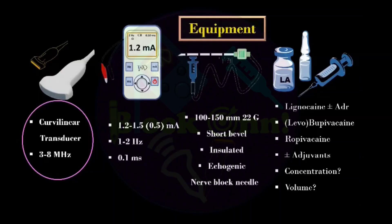For lumbar plexus block, if you are using ultrasound or dual guidance, we generally use curvilinear transducer as it is a deeper structure. In pediatric patients, sometimes I use linear probe. If you are using only PNS guided technique, then 1.5 milliampere would be the starting current with 1 to 2 hertz frequency and 0.1 millisecond pulse duration. We need 100 to 150 millimeter 22 gauge short bevel insulated echogenic nerve block needle for this block.